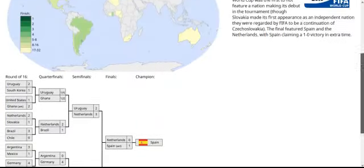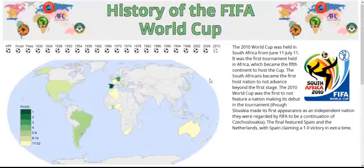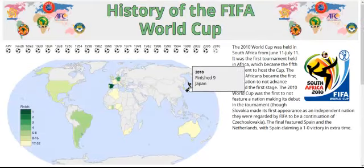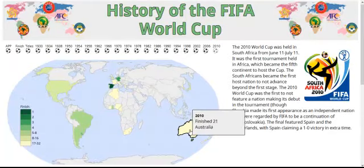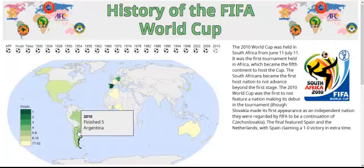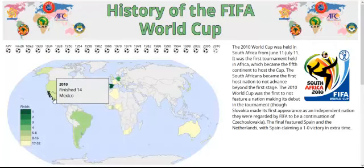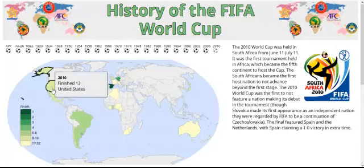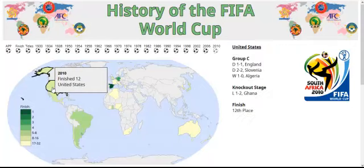Once a map is selected, a user can interact with that map by moving the cursor over the countries. The user is given another visual affordance when the countries are highlighted, and a pop-up window displays with the information for that map. The user can click on the highlighted country to retrieve further information.